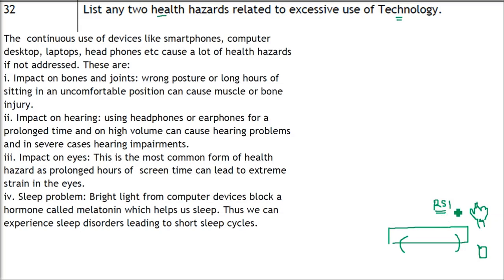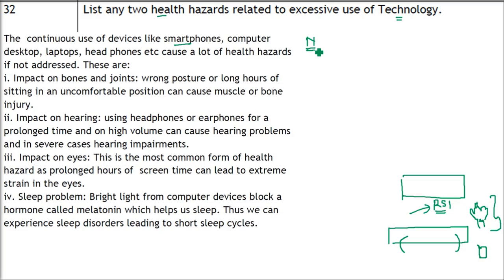These are minor problems but they are significantly affecting my life due to technology overuse. The continuous use of electronic devices — whether big screens, smartphones, laptops, or headphones — impacts the body unnaturally. Wrong posture or long hours of sitting in an uncomfortable position can cause muscle or bone injury when it becomes repetitive over time.